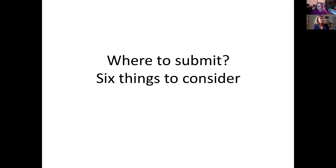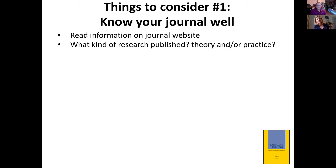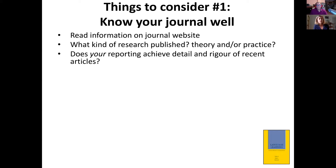Where to submit is the big decision. Six things to consider: first, know your journal really well. Read the information on the journal website carefully. Get a feel for the articles that journal publishes. Do they have a very strong theoretical focus or a practical focus? Does your reporting achieve the detail and rigor of recent articles published? Our standards are changing — a few years ago we didn't expect effect sizes, now we always do. Try to look at some recent articles to check about the level of methodological rigor expected.